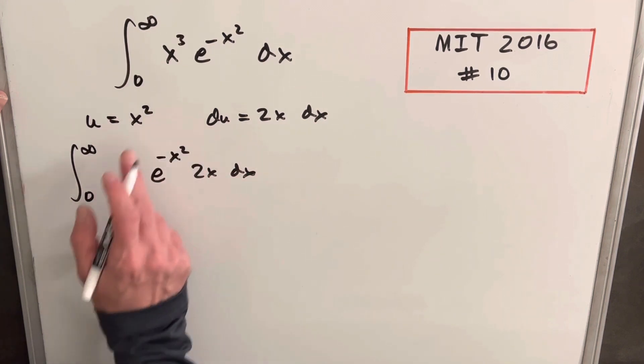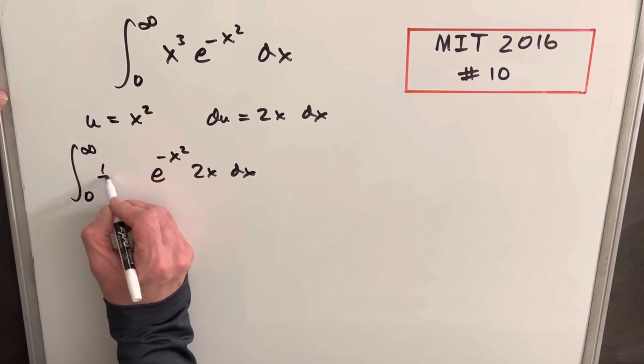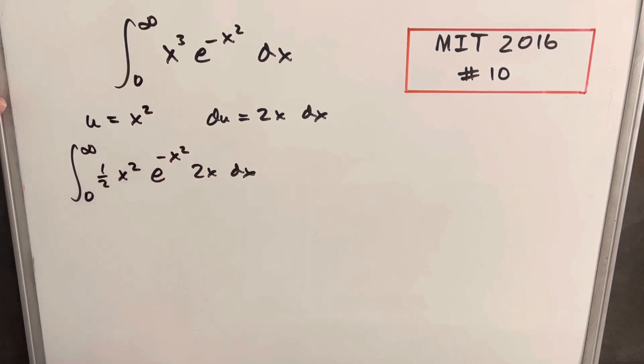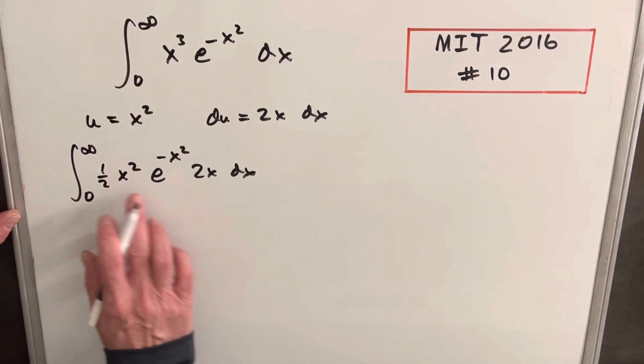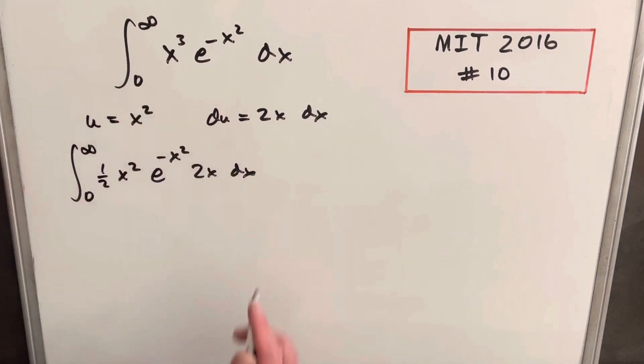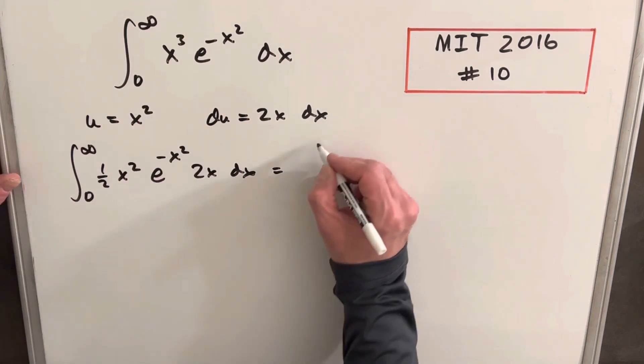But then doing that, we still have an x cubed here, so let's write this as half x squared. Noticing half x squared times 2x is x cubed. And then now I'll make my substitution.